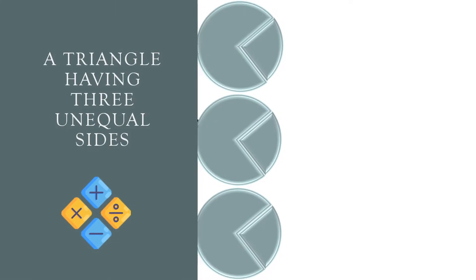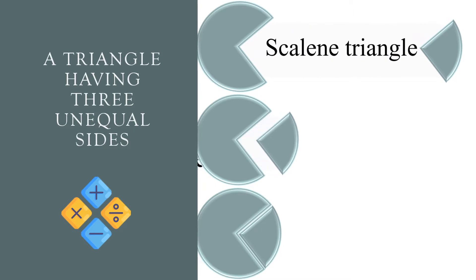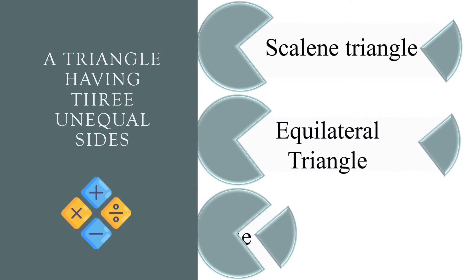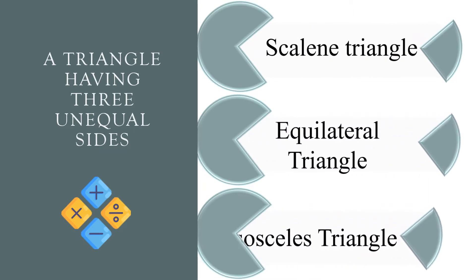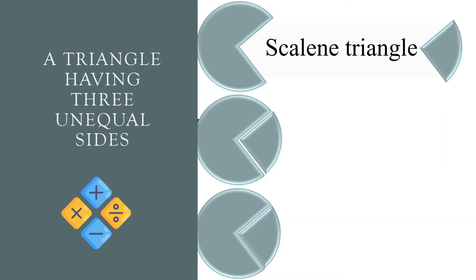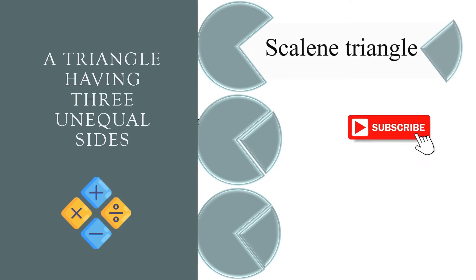A triangle having three unequal sides. Scalene triangle, equilateral triangle, or isosceles triangle? The correct answer is scalene triangle.